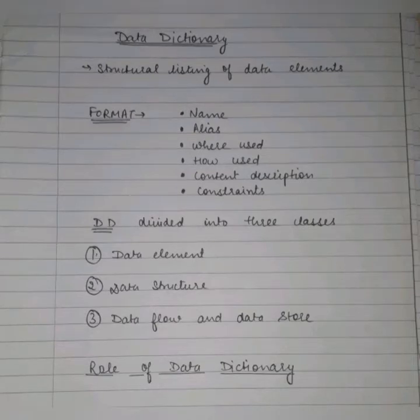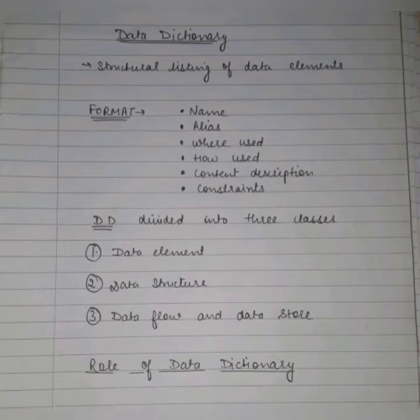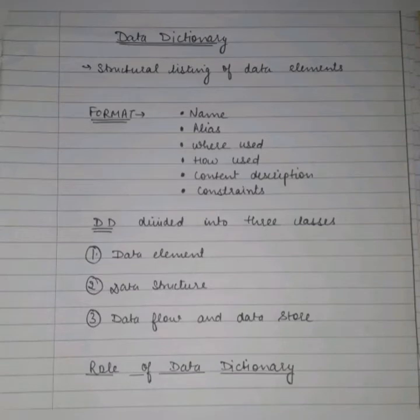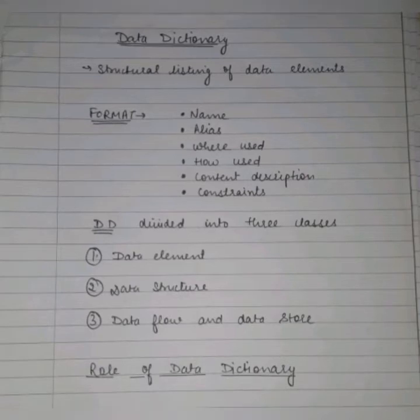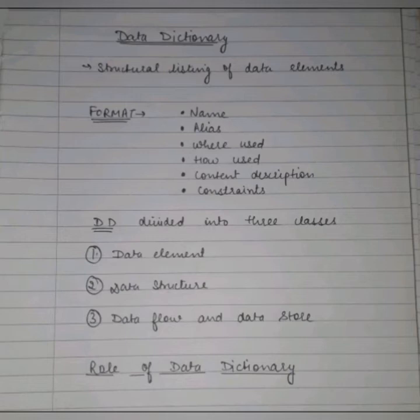Now let's talk about the role of the data dictionary. The data dictionary and data repository are used to indicate a more general software utility than a catalog. The catalog and data dictionary are not entirely different — the catalog is closely related with DBMS software and provides information stored in it to the user and the DBA, but it is mainly accessed by the various software modules of DBMS itself, like DDL and DML.